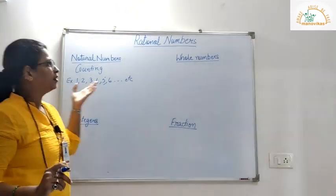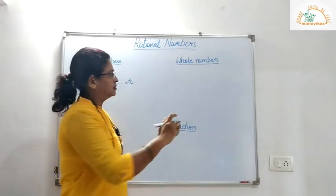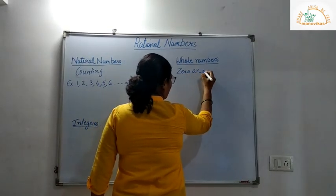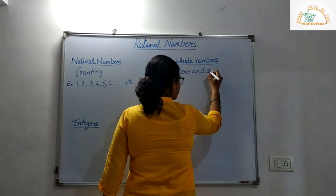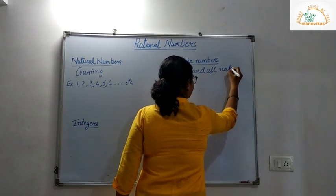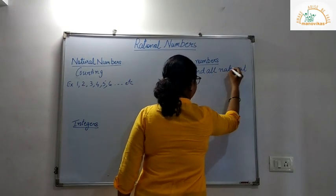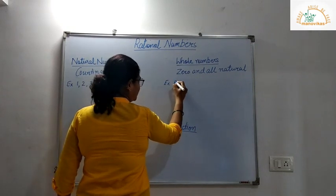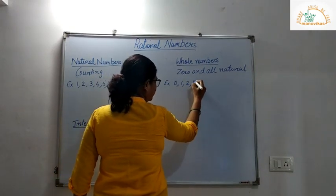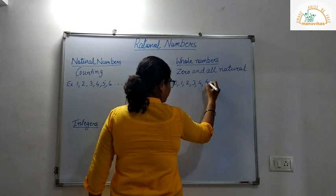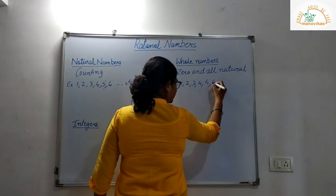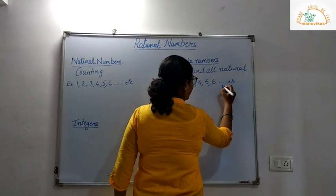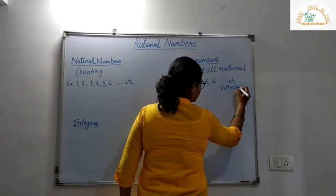Now, what are whole numbers? 0 and all natural numbers are called as whole numbers. So for example, 0, 1, 2, 3, 4, 5, 6, and so on are called as whole numbers.